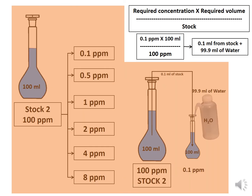For low-level required concentrations, for example 0.1 ppm to 8 ppm, we use the 100 ppm secondary stock. Using the same formula: required concentration 0.1 ppm multiplied by required volume 100 ml, divided by stock 100 ppm. We take 0.1 ml of solution from the 100 ppm stock and mix with 99 ml of water, which gives 0.1 ppm of the required concentration.